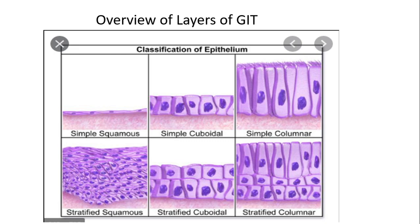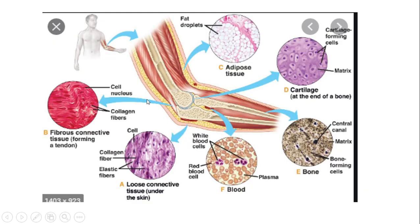Epithelium works like bricks, but what about the cement and iron for it? That is connective tissue. We have loose connective tissue, fibrous connective tissue, adipose tissue, cartilage, bone, and blood cells from blood vessels. These are all types of connective tissue required for the support of epithelial cells and different types of cells.